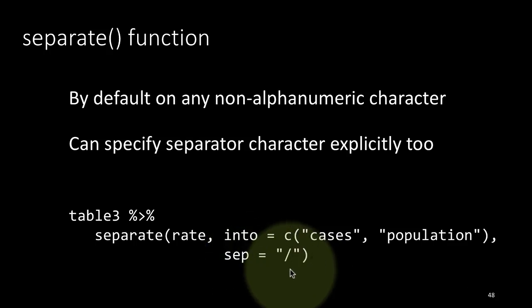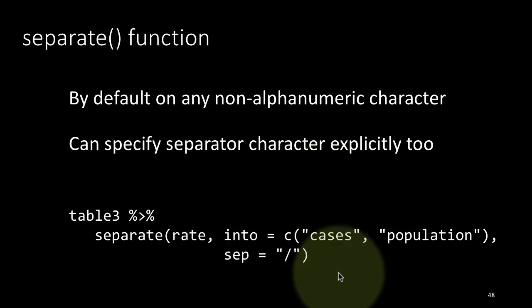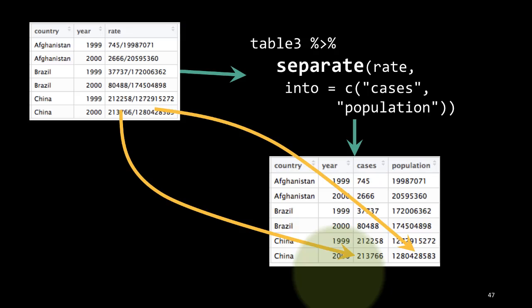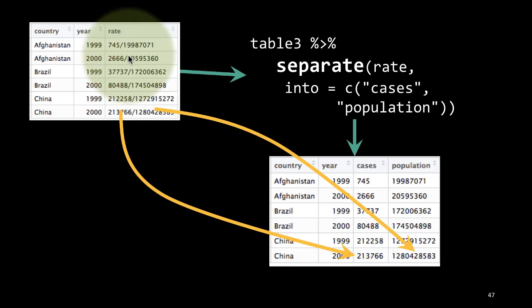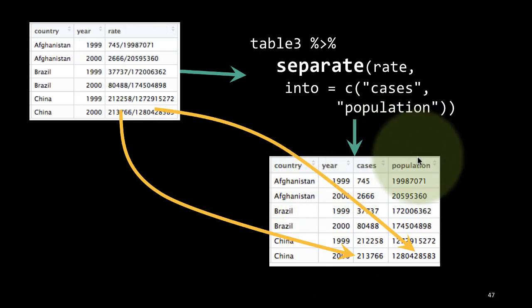The separator doesn't have to be just a single character — it can be a collection of characters. For example, if there's a slash followed by a space and you want to get rid of both, you can say the separator is slash followed by a space. So sep is actually any string you want to use as a separator, and the separator itself does not appear in any of the resulting columns — as we saw, the slash has vanished from both cases and population.